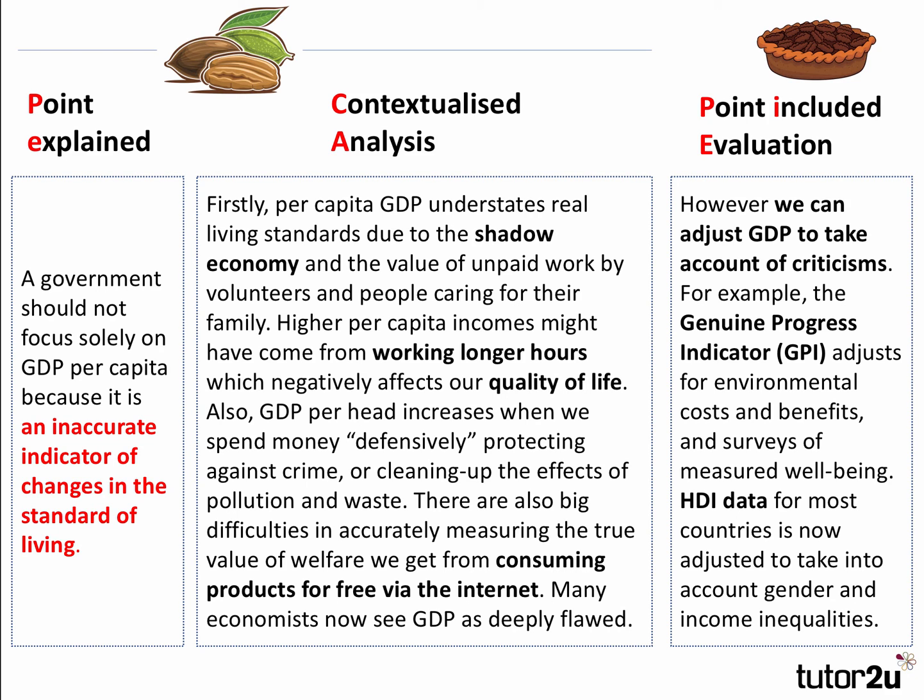However, we can make and many economists do make adjustments to GDP to address these criticisms. The Genuine Progress Indicator (GPI) adjusts for environmental costs and benefits and surveys of people's measured happiness and well-being. HDI data is now adjusted to account for gender and income inequality. Instead of life expectancy we might focus on years of healthy life expectancy, and instead of mean years of schooling we might look at quality outcomes such as functional literacy. These improvements and amendments to national income data are actively being developed by economists.